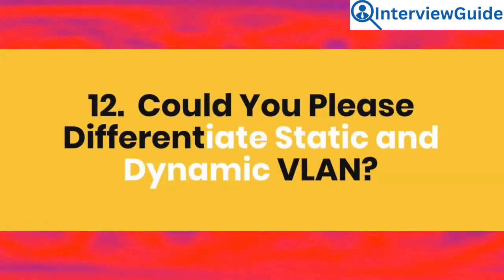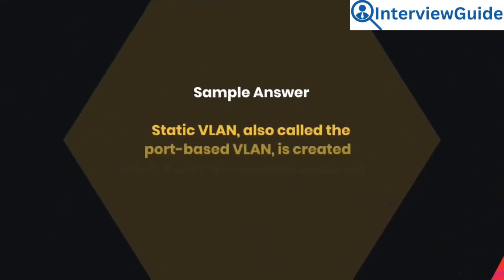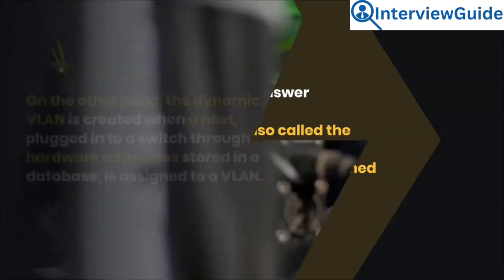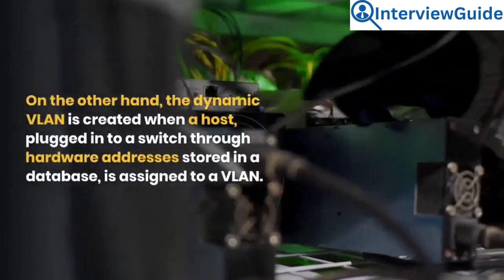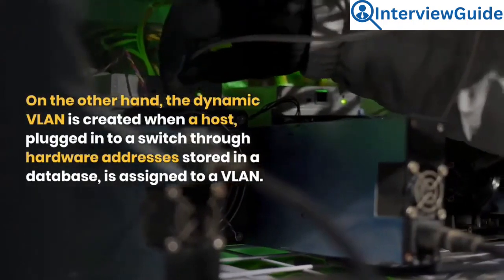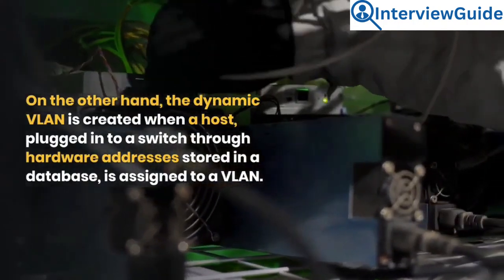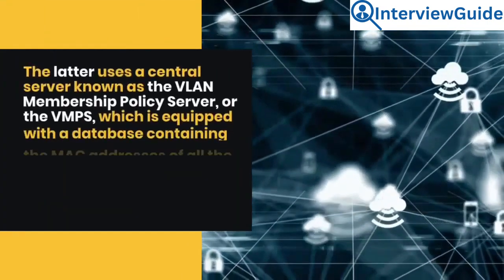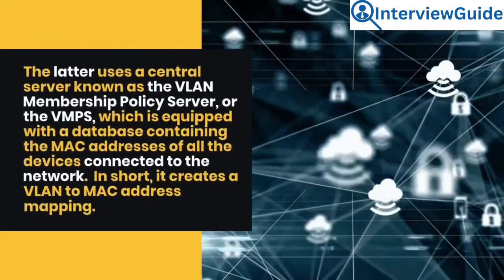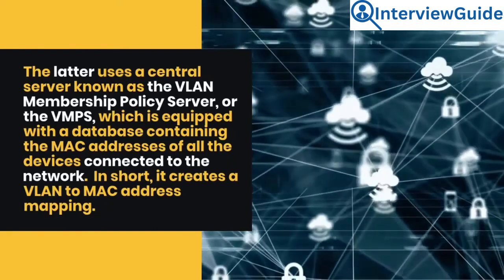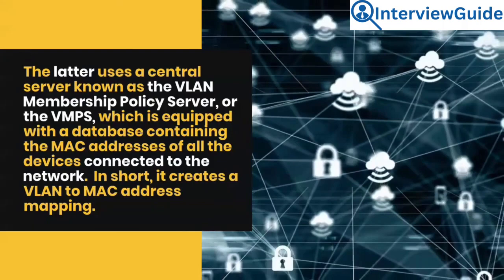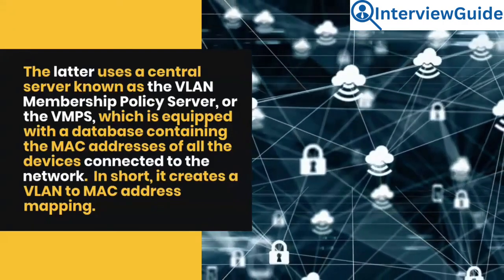Question 12: Could you please differentiate static and dynamic VLAN? Static VLAN, also called port-based VLAN, is created when a port is manually assigned to a VLAN. On the other hand, dynamic VLAN is created when a host plugged into a switch through its hardware address, stored in a database, is assigned to a VLAN. The latter uses a central server known as the VLAN Membership Policy Server (VMPS), which contains a database of MAC addresses of all devices connected to the network, creating a VLAN-to-MAC address mapping.